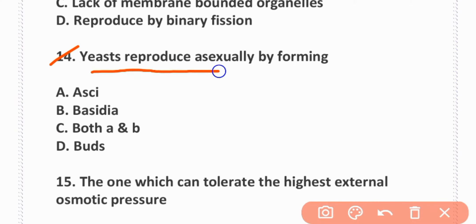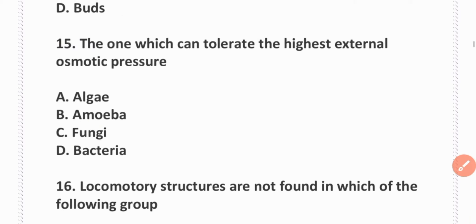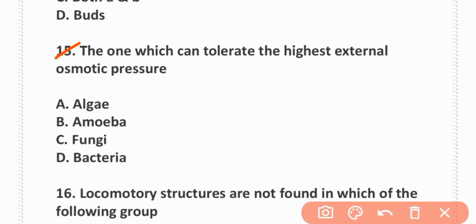Yeast reproduces asexually by forming buds. Option D is correct. The one which can tolerate the highest external osmotic pressure is fungi. C is correct.